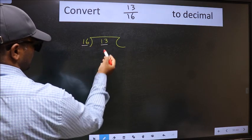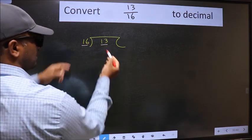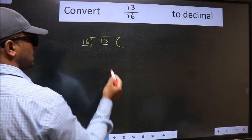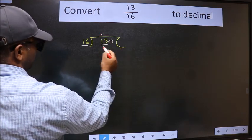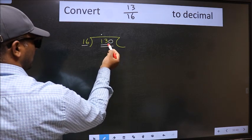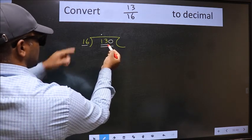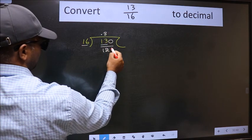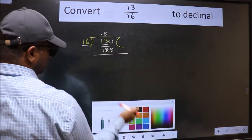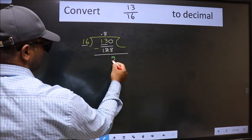13 is smaller than 16, so what we should do is put dot and take 0, so 130. A number close to 130 in 16 table is 16 times 8, 128. Now we should subtract, we get 2.